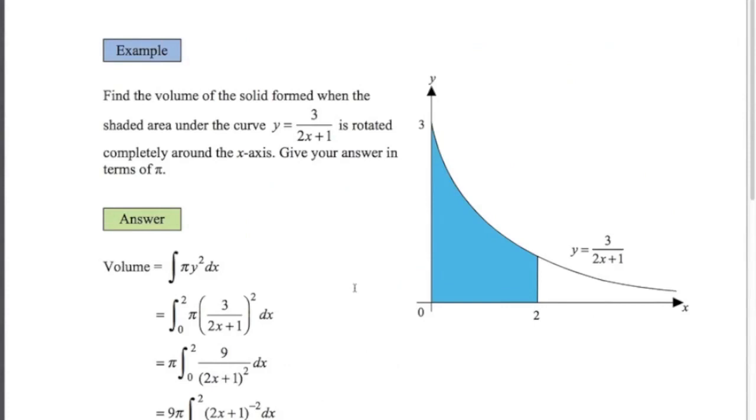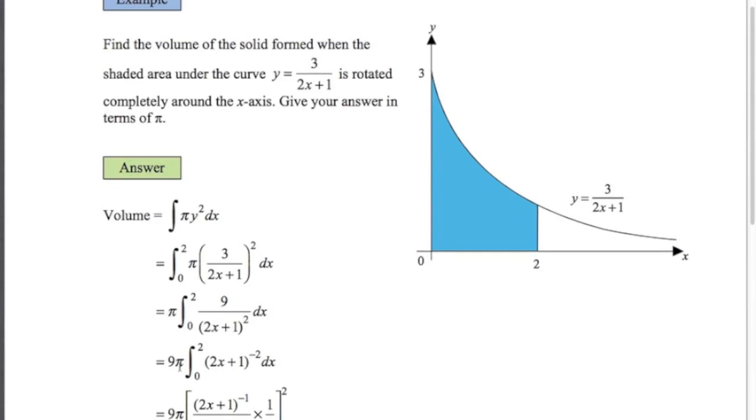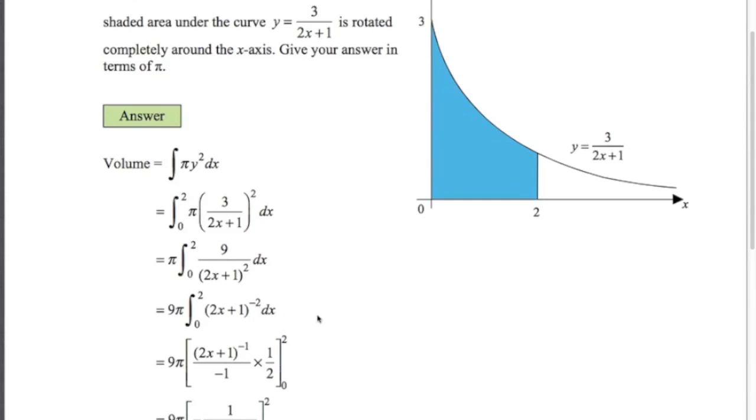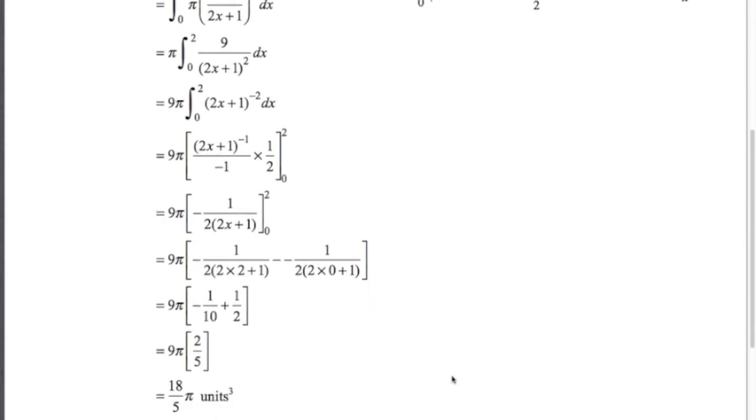The second example is similar. We just have a slightly more complicated equation: y equals 3 over 2x plus 1. We're looking to find the volume when we rotate it completely about the x-axis between 2 and 0. The limits of integration are 2 and 0. We've got pi y squared dx. This one requires the reverse chain rule. I've put the 9 and the pi out the front. 2x plus 1 squared on the bottom becomes 2x plus 1 to the minus 2. I've applied the reverse chain rule. Don't forget times by 1 over the number in front of the x. I've tidied that up, then substituted in 2 and 0 and subtracted. It's very easy to go wrong in this step. You have to be really careful. Look at the signs here. It's minus and a negative here, so this is going to be plus. It's really easy to make a mistake, so be very careful. We get 18 over 5 pi units cubed.